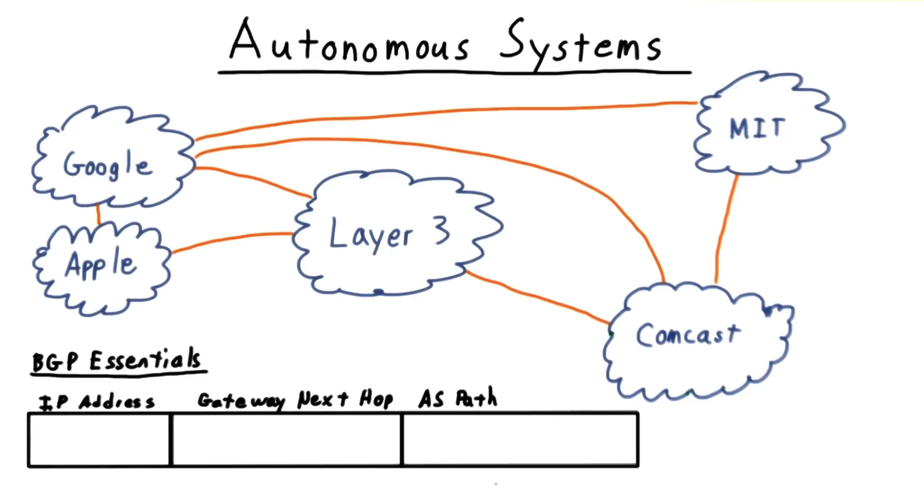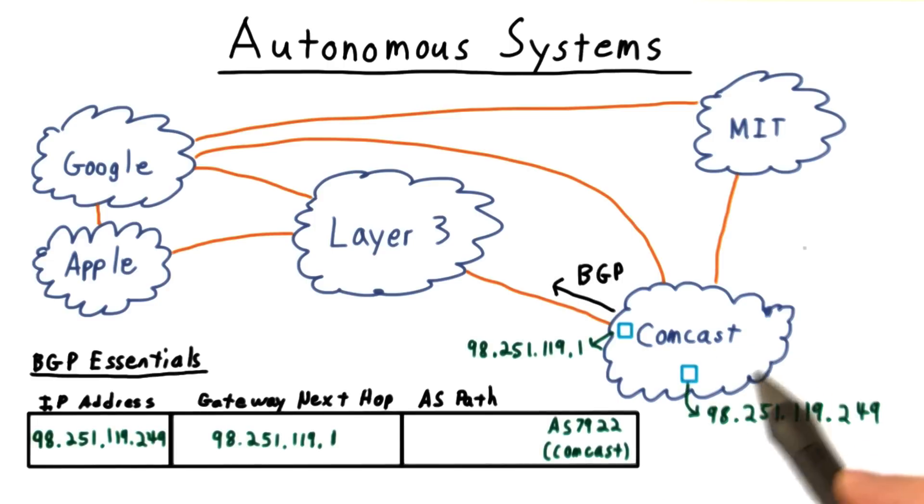An AS receiving such a message would incorporate the information into its own routing tables so that it knows where to forward packets. To take an example,